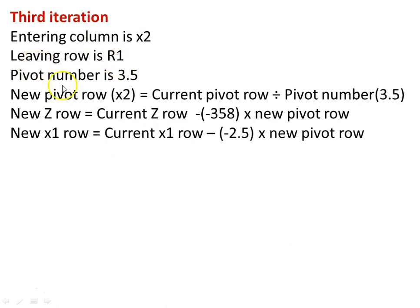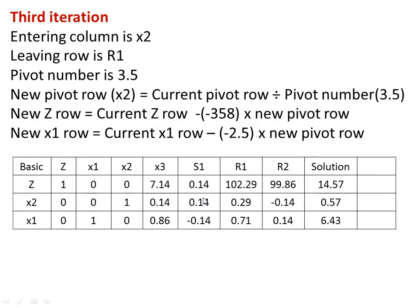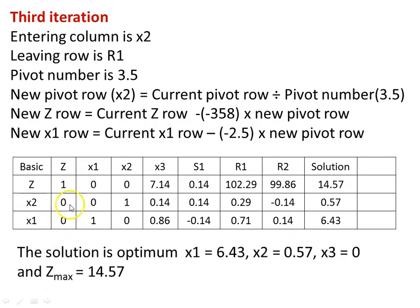For the third iteration: entering column is x2, leaving row is r1, and pivot number is 3.5. New pivot row for x2 equals current pivot row divided by pivot number. New z-row equals current z-row minus its entering column coefficient times new pivot row. New x1-row equals current x1-row minus (−2.5), the entering column coefficient, times new pivot row. Calculating the result, the z-row values of the non-basic variables are: x1=0, x2=0, x3=7.4, s1=0.14 — all positive, so the solution is optimal. The solution is x1 equal to 6.43, x2 equal to 0.57, and z equal to 14.57.